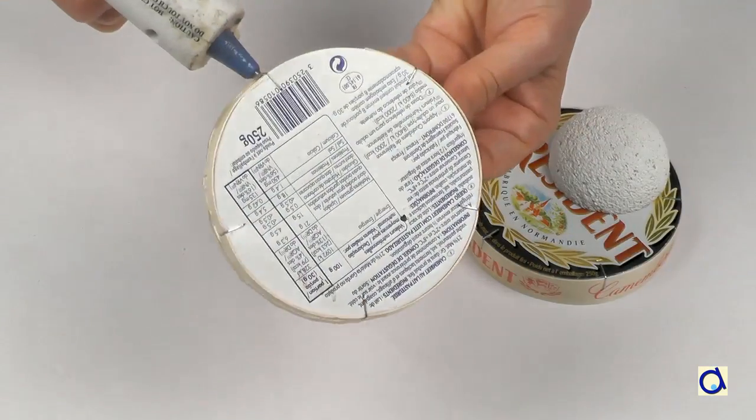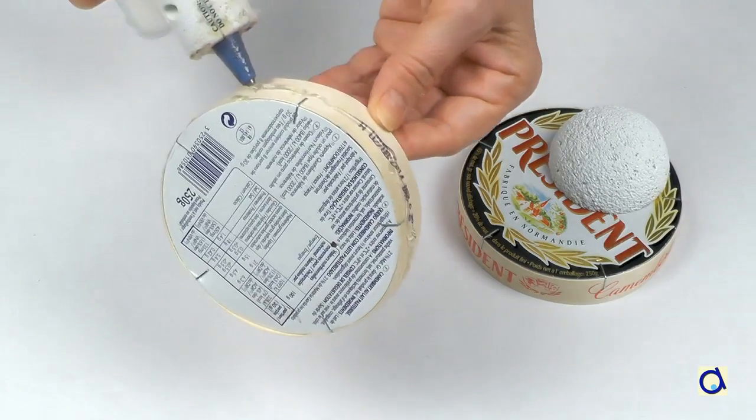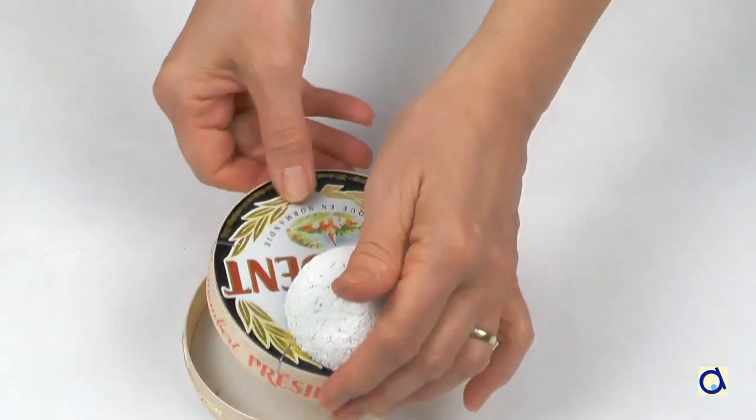Open the Camembert box and glue the cover of the box to the bottom part of the box with white glue or hot glue.